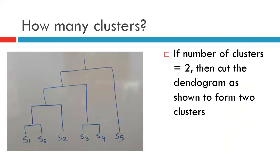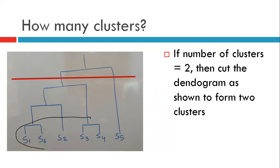Say for example the problem requires us to form two clusters. How will we cut the dendrogram to form two clusters? To form two clusters, if the dendrogram is cut across the red line shown, we will get two clusters. The first cluster will have these points and the second cluster will have the remaining point. This was the numerical example of agglomerative hierarchical clustering method. Thank you very much for your patient listening.